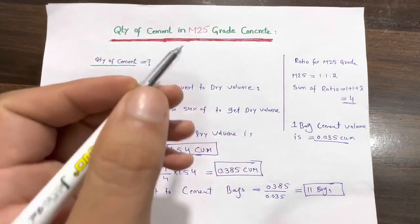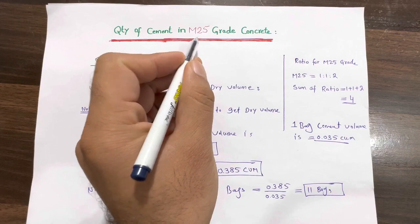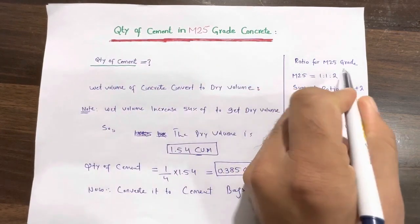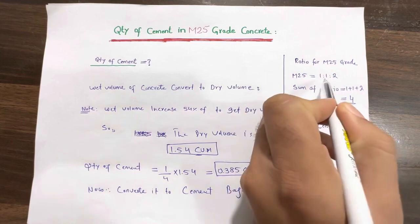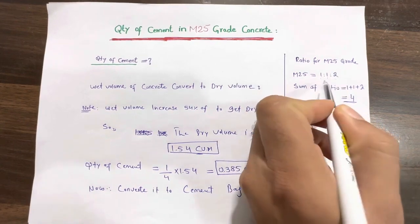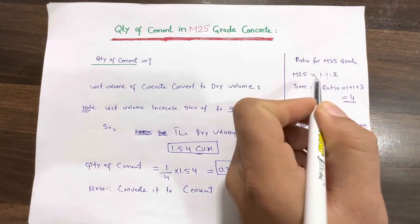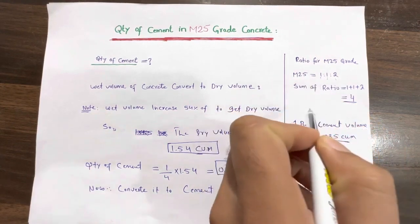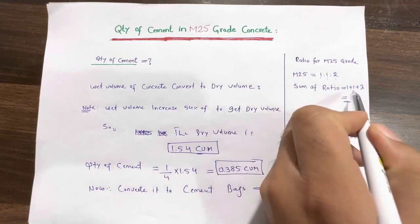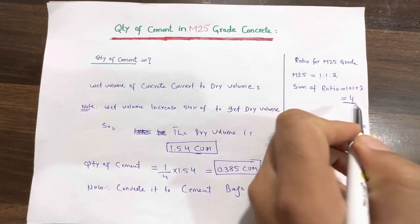We are finding the quantity of cement in M25 grade of concrete. The ratio for M25 grade concrete is 1:1:2, where 1 part is cement, 1 part is sand, and 2 parts are aggregate. So the sum of the ratio for M25 grade of concrete is 1 plus 1 plus 2, which equals 4.